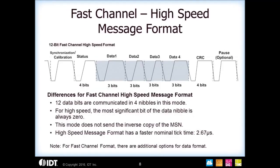The third fast channel messaging format is called the high speed message format. The data comes out as 12 bits, but it comes out in four nibbles instead of three nibbles with only three bytes represented. By eliminating the most significant bit in each nibble, it narrows the overall pulse width so you can get faster data throughput. This format also has a slightly faster tick time than standard — 2.67 microseconds.